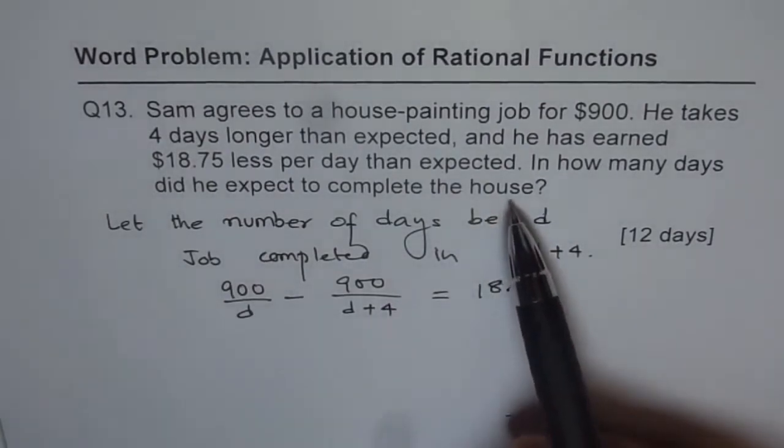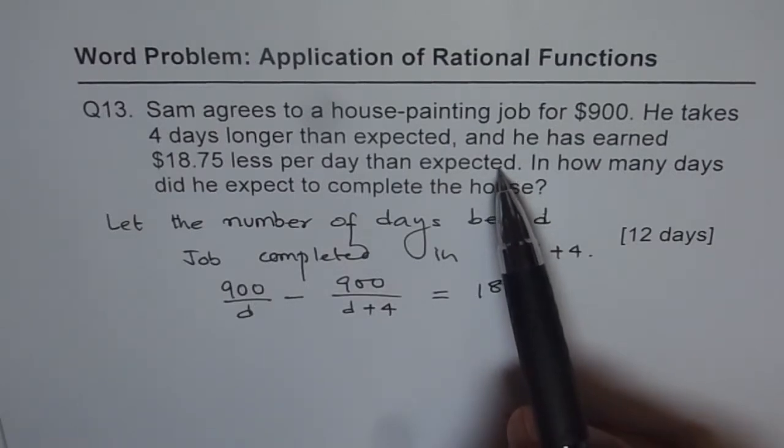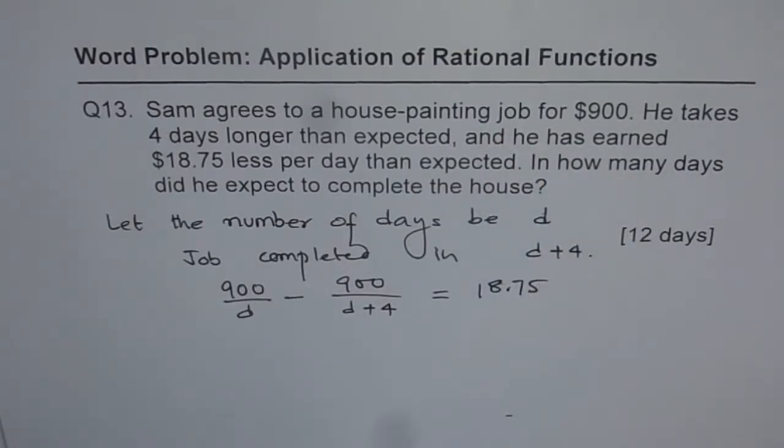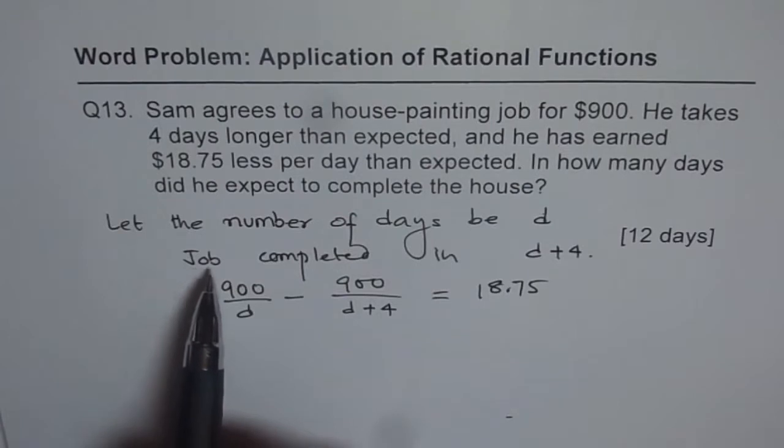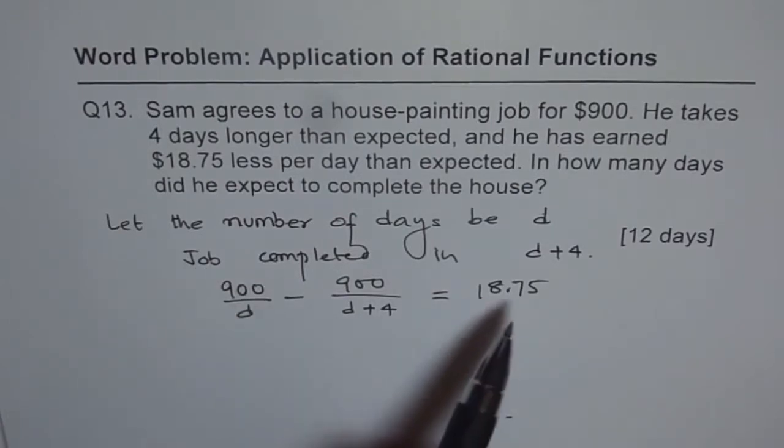So the last statement tells you what to find, the second last statement tells you how to find, and the first statement tells you what all is given to you. So start with the last statement, define your let statement, write down what all is given to you, develop an equation, solve it.